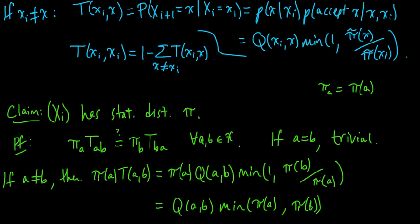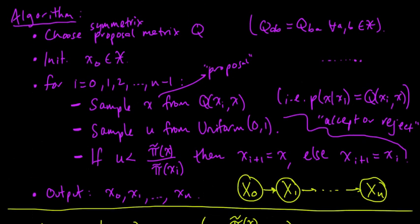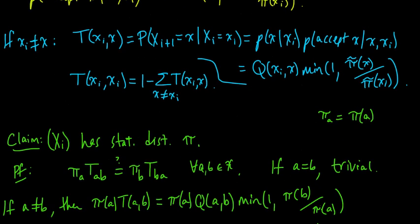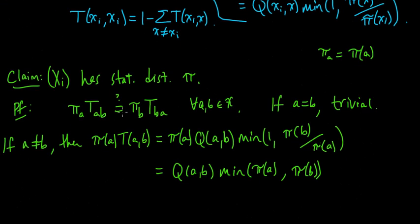We're in excellent shape because this expression is symmetric in a and b: the min(π(a), π(b)) is clearly symmetric, and by our choice of Q, we have Q(a, b) = Q(b, a) — we chose a symmetric proposal matrix Q. Therefore detailed balance is satisfied, and the Markov chain constructed by the Metropolis algorithm does indeed have stationary distribution π.